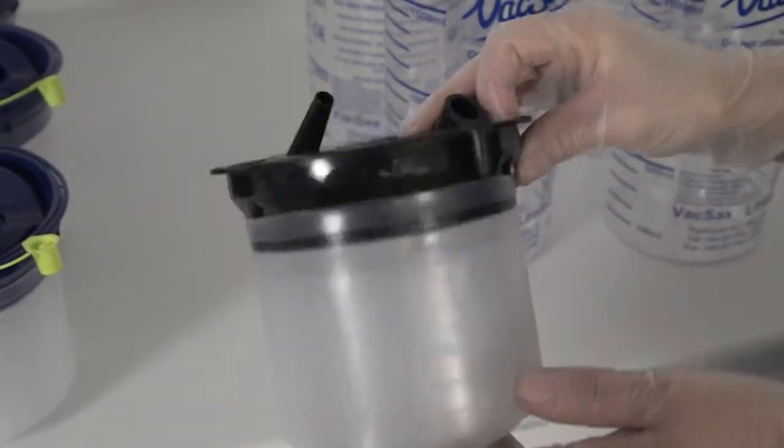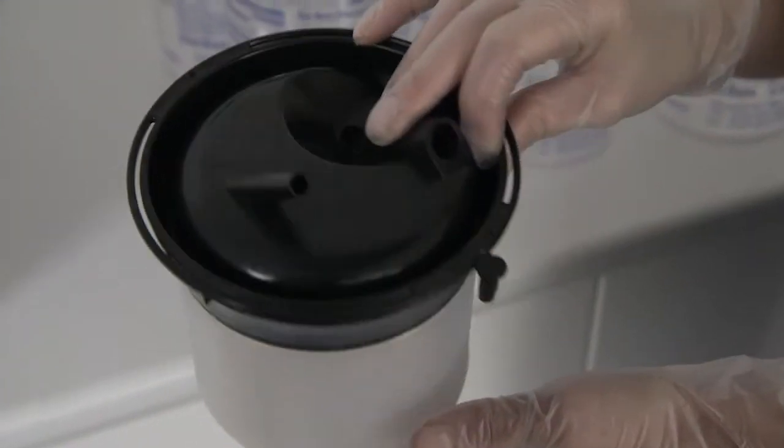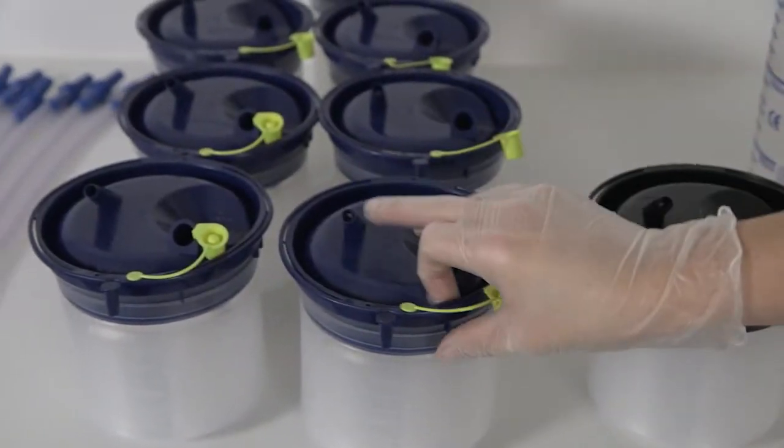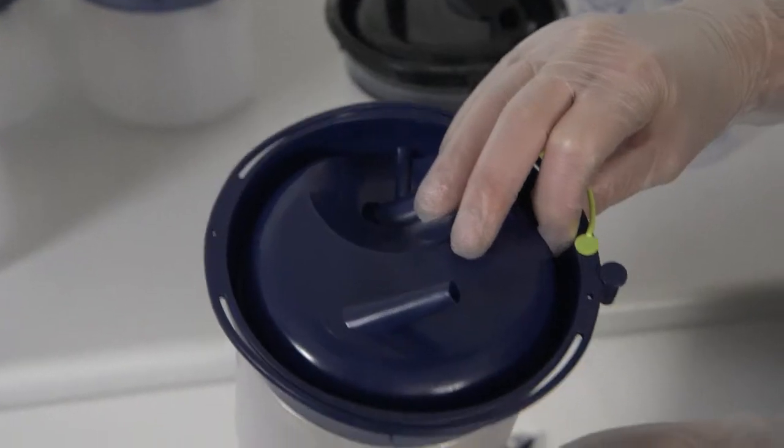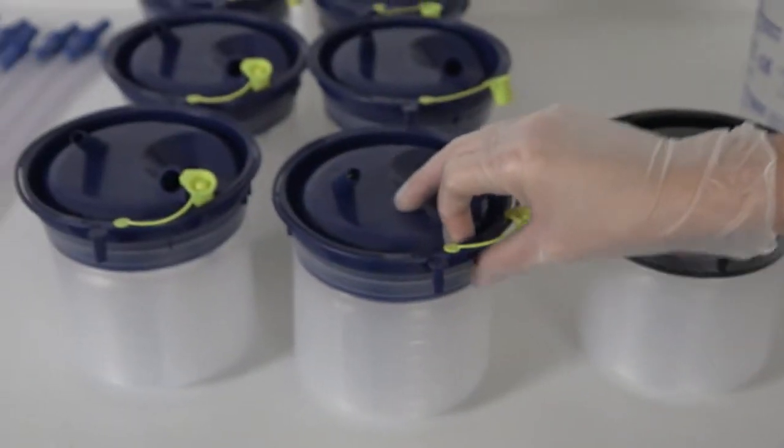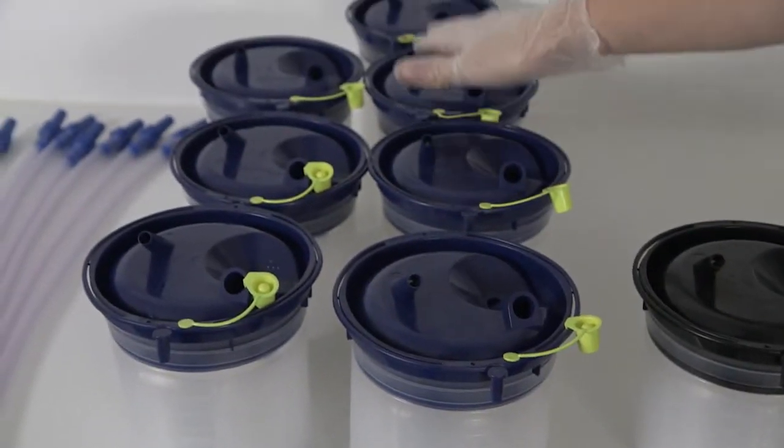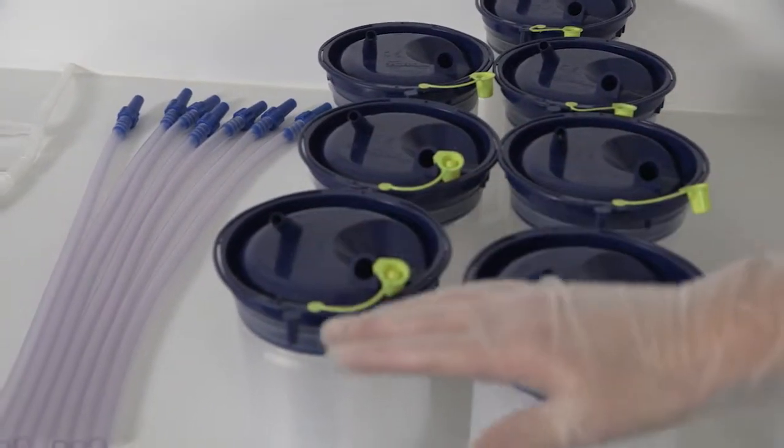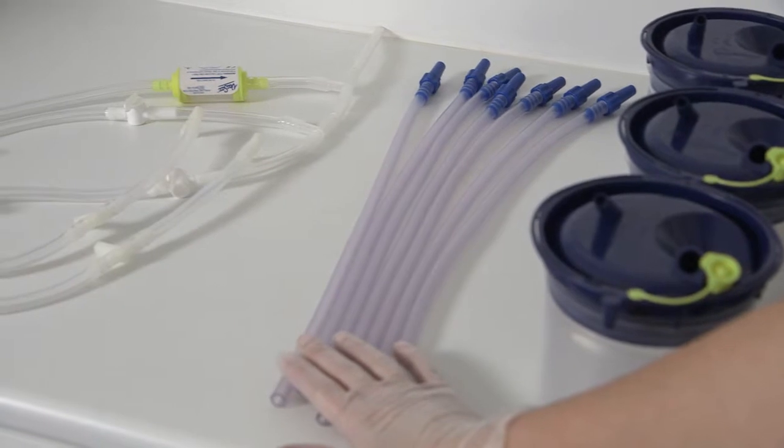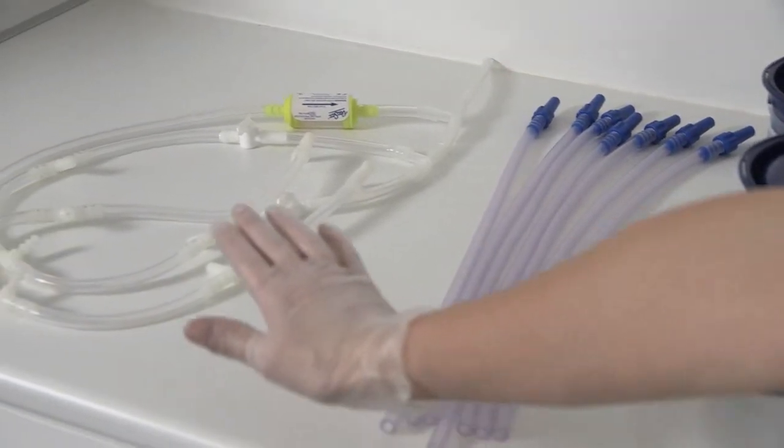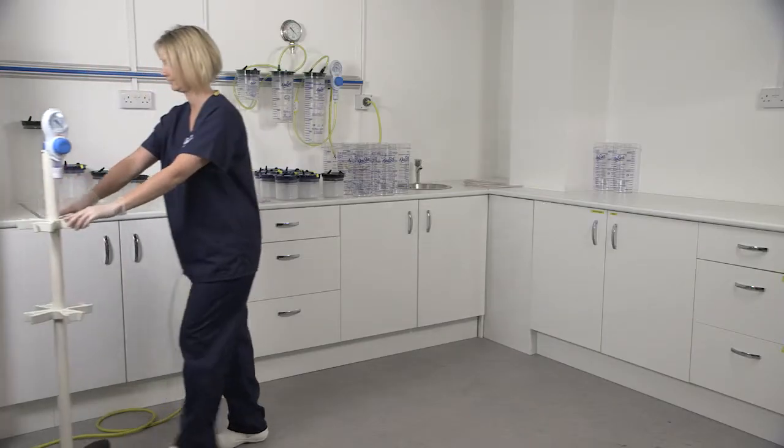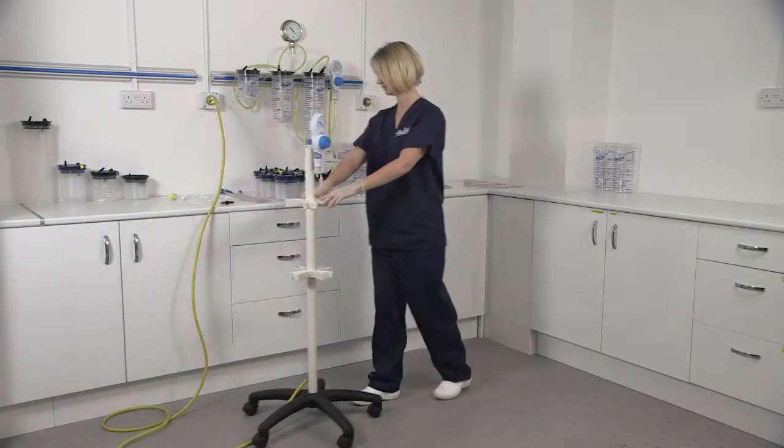One two litre standard black top liner and seven two litre cascade blue top liners. You also need seven cascade tubing sets and the reusable cascade tubing kit for the eight position cascade stand.